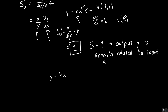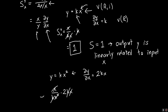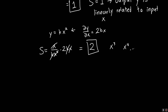We can plug in the definition again: x over y, which is kx², times the derivative dy/dx, which is 2kx. Multiplying this out, everything cancels except for the two. So the sensitivity of any quadratic relationship is 2, and you'll get the same thing for a cubic relationship, a quartic relationship, and so on. You can think of sensitivity as the order of the dependence.